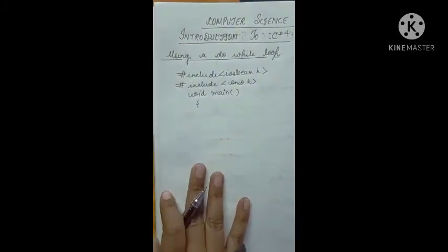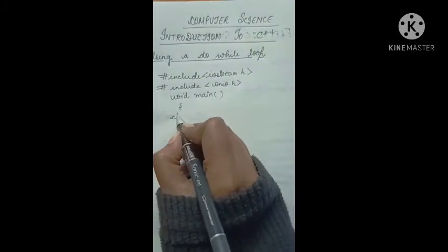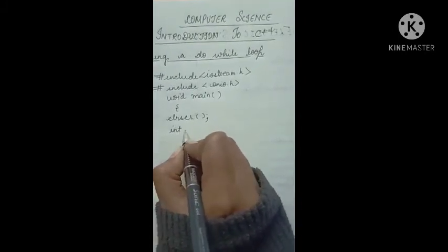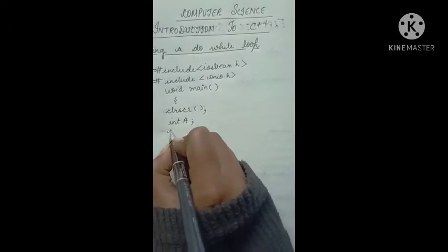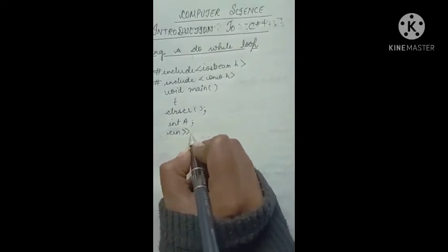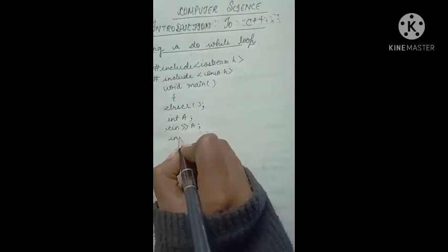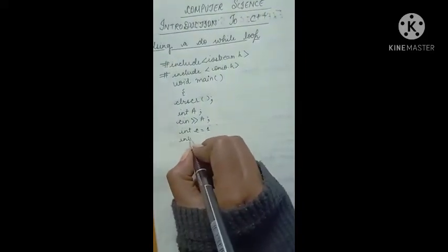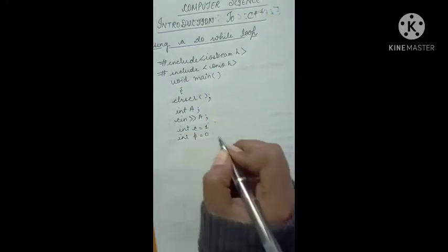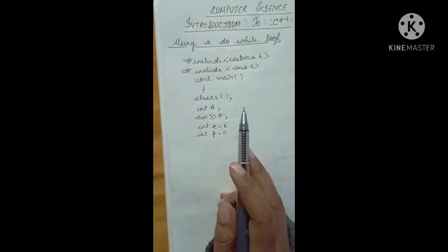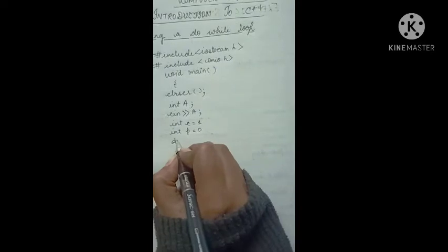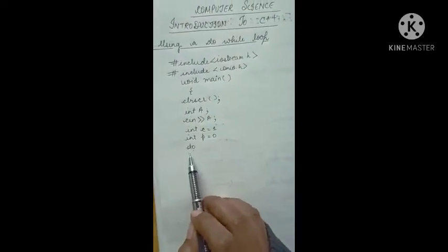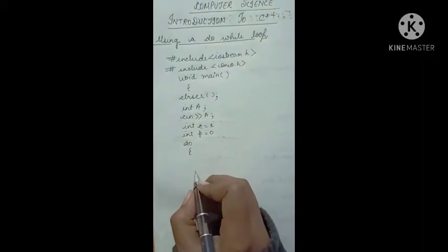Then void main, we open the braces, and here we give clrscr. Then we declare the variables: int a, c. Then int c is equal to 1, and int p is equal to 0, as we have taken in the previous program. Now this is the do-while loop, so first we give 'do', then we open the braces.